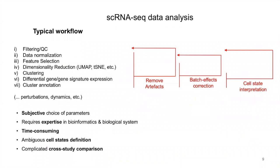In a typical single-cell analysis workflow, we have multiple steps towards the definition of cell states, such as feature selection, dimensionality reduction, and clustering, which depend on subjective choices of parameters. This is usually an iterative process driven by biological interpretation and therefore is highly time-consuming and requires expertise both in bioinformatics and in the biological system. As a result, we get ambiguous definitions of cell states.